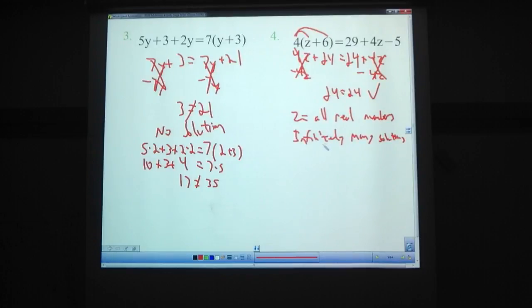Let's just check a number on this. Let's go with 1. Why not? So 4 times 1 plus 6. That's 4 times 7. That's 28. On the other side, 29 plus 4 times 1, 1 is just 4. Minus 5. 29 plus 4 is 33. Minus 5, 28. Yay.